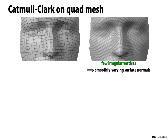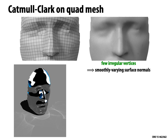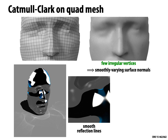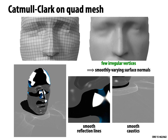Because of this, the limit surface is well-behaved almost everywhere. Away from irregular vertices, we get really nice normals, curvatures, and other properties of a smooth surface. For example, rendering a glossy mirrored surface using Catmull-Clark gives really nice smooth reflection lines and smooth caustics — the pattern of focused light is really nice and round, like you'd see in the real world.